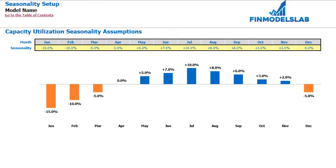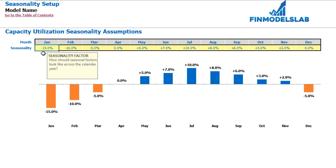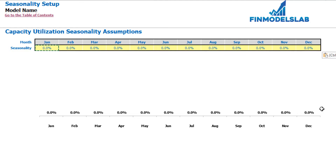On the seasonality tab you can set up your capacity utilization seasonality assumptions across the months. The dashboard previously set up the average capacity utilization by years, and here you adjust it for different months. For example, minus 10% means that if you have 50% average capacity utilization, you multiply 50% by 0.9 to get 45% for February. Plus 10% in July means 50% multiplied by 1.1 gives 55%. If you don't need seasonality, put 0 across all months for a flat rate.